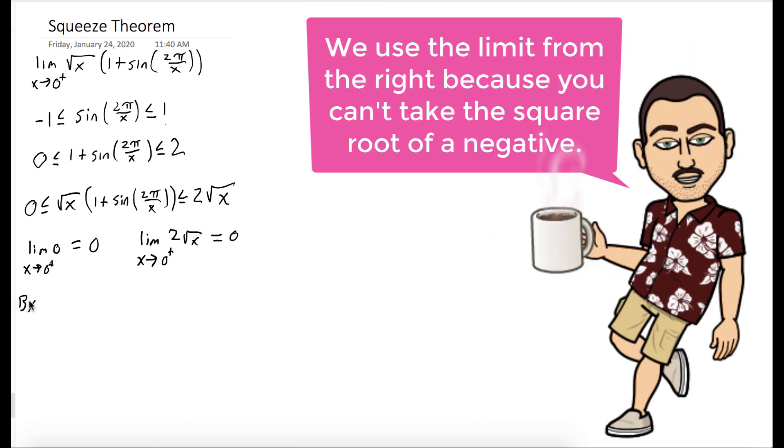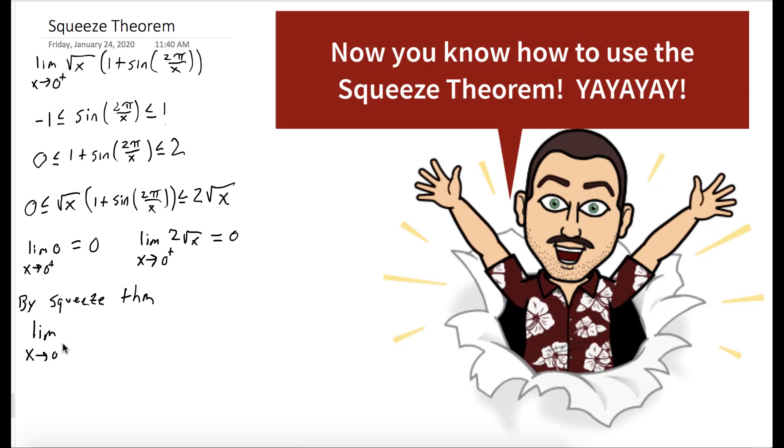So by the squeeze theorem, since the lower bound and the upper bound both go to zero, anything in between goes to zero. So our limit is zero.